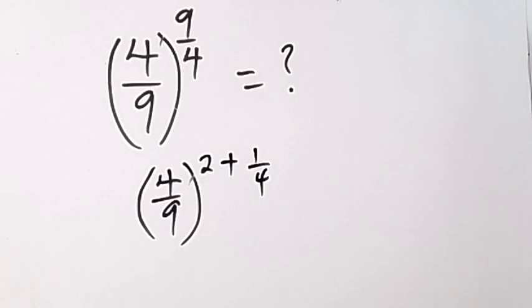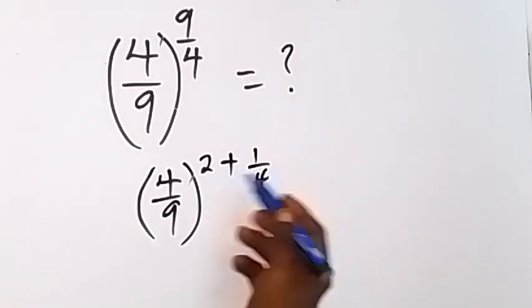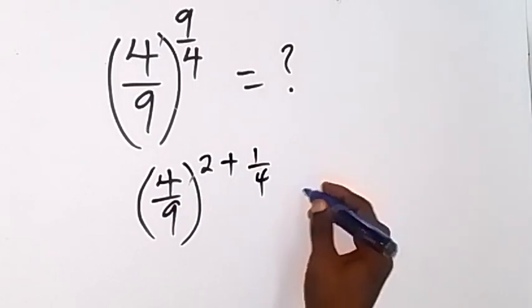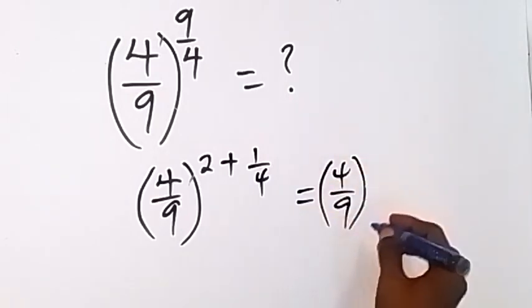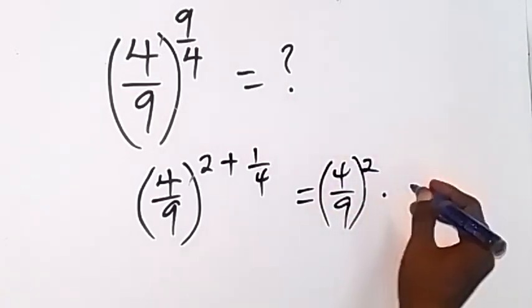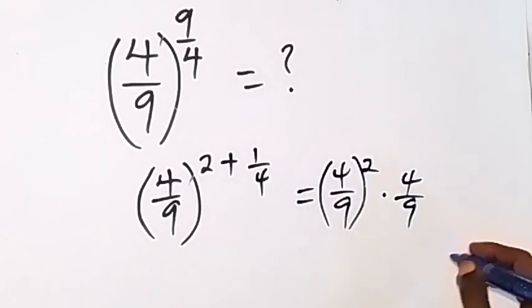And you can see that we have a sum in the exponent, so we can split it as well. And say this will be (4/9)^2 then times (4/9)^(1/4). So we have split it down now because we have a sum, so they can multiply.